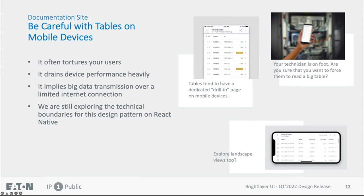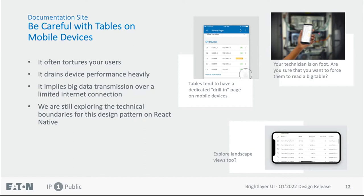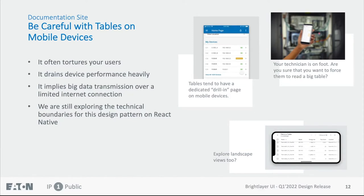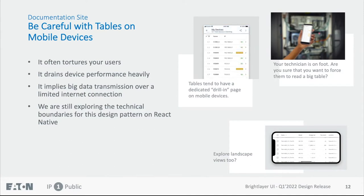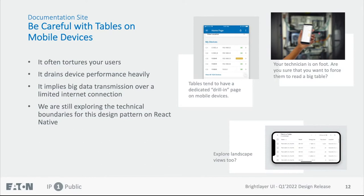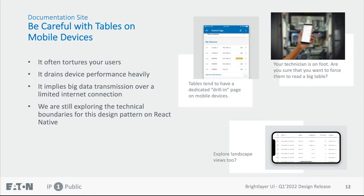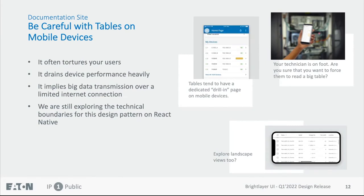Another highlight: be careful with tables on mobile devices. It's very painful on mobile phones and tablets in general because it tortures your users. It drains device performance really heavily if you have a lot of data rows at the same time. It also implies a lot of data transmission over a limited internet connection. And for React Native projects, we are still exploring the technical boundaries for this design pattern.